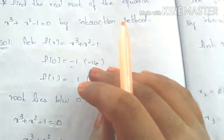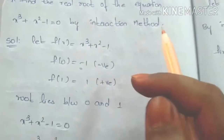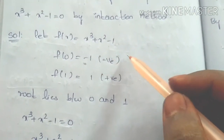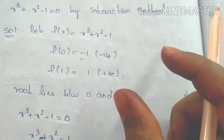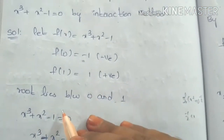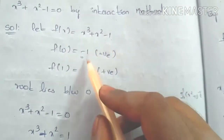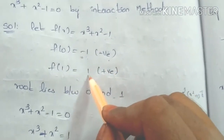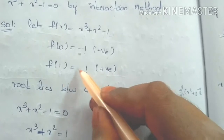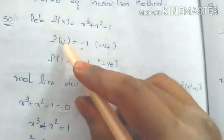In this problem, we will choose the intermediate value theorem. We substitute values to find opposite signs in the function. First, substitute 0: f(0) equals 0 plus 0 minus 1 equals minus 1, which is a negative value. Next, f(1): we substitute and get a positive value. So the root lies between 0 and 1.